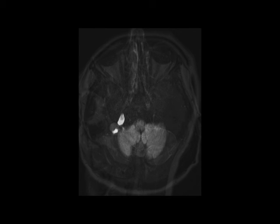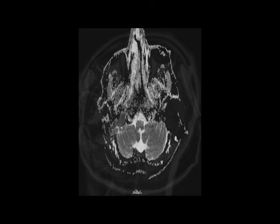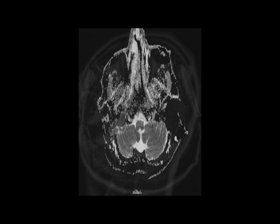The findings are confirmed on the DWI and ADC maps where there is diffusion restriction at the sites of thrombosis. The 3D maximal intensity projection MR venogram confirms the absence of flow within the thrombosed transverse sinus, sigmoid sinus, and proximal right internal jugular vein.